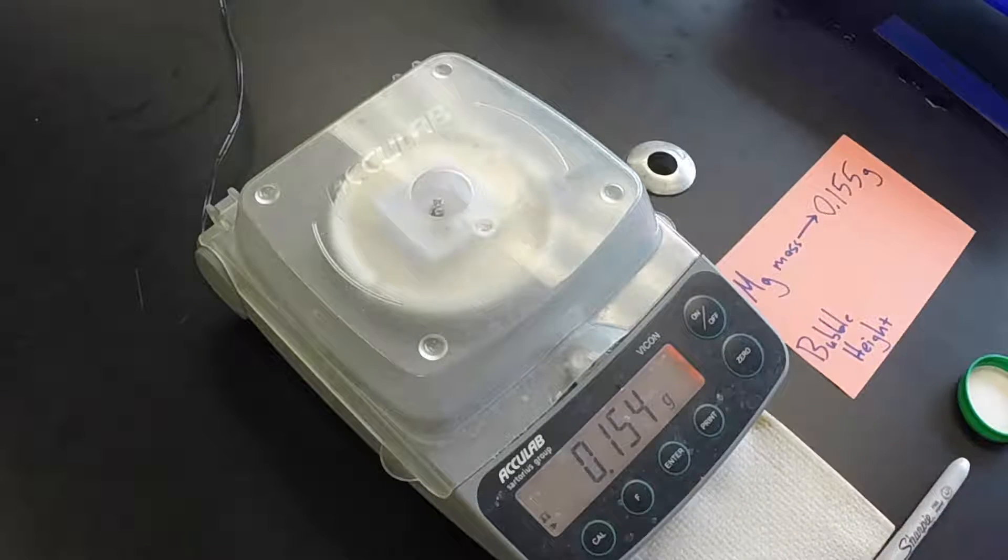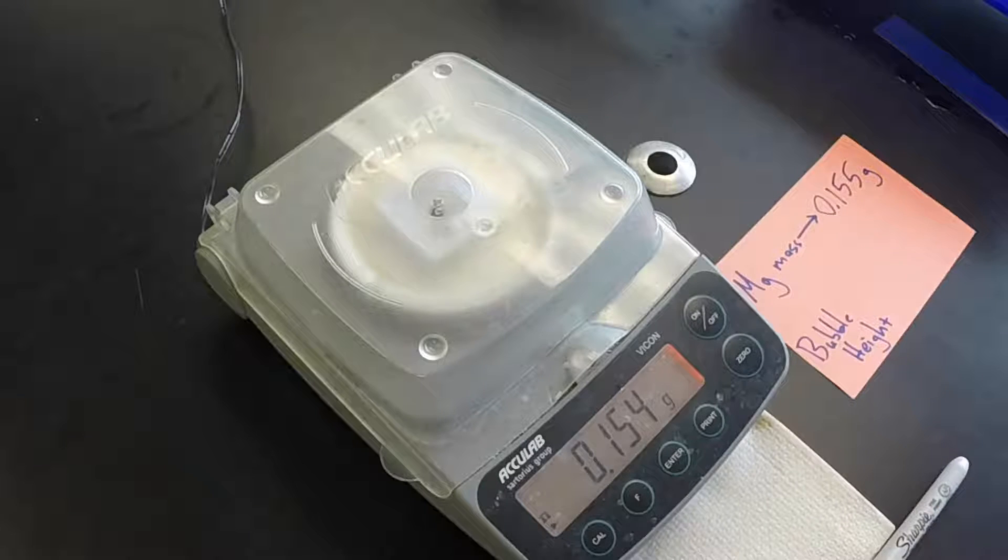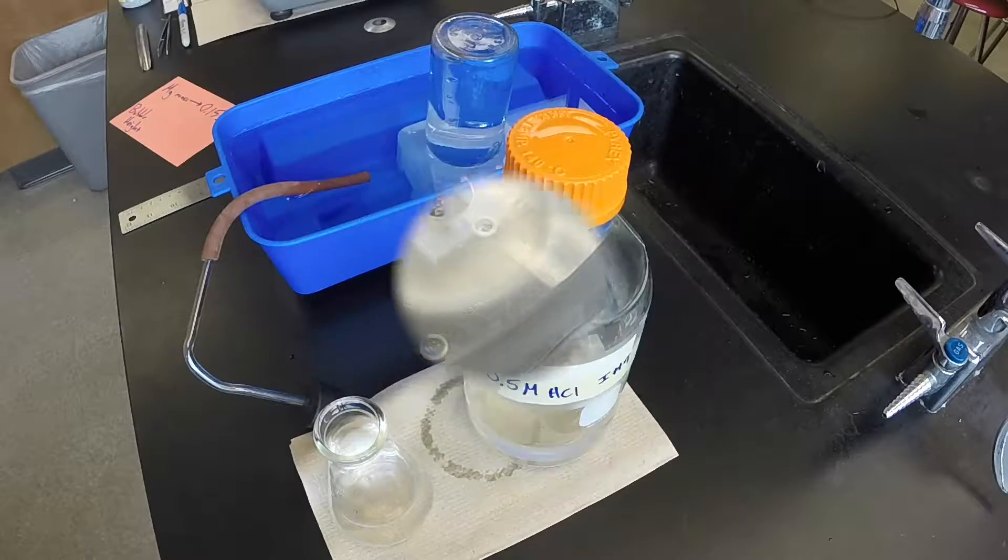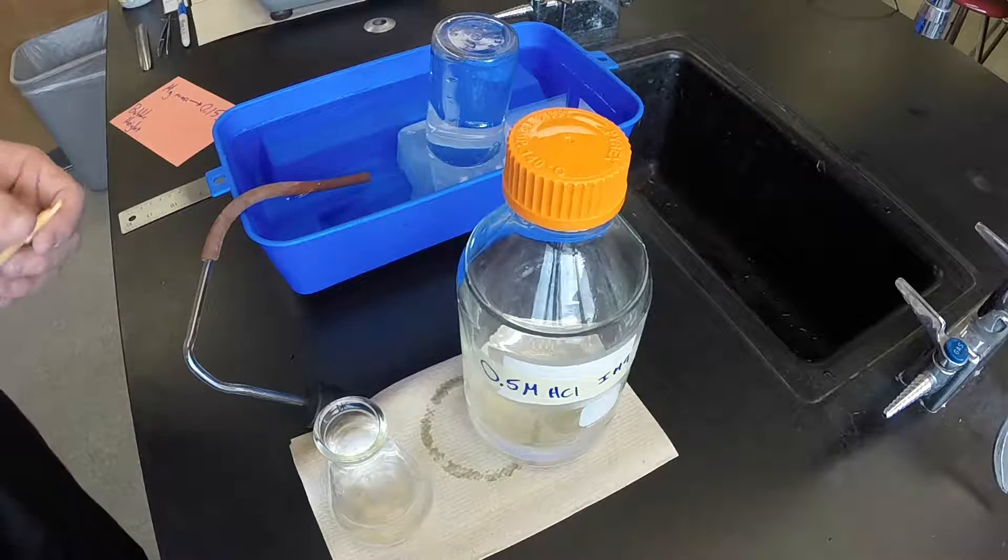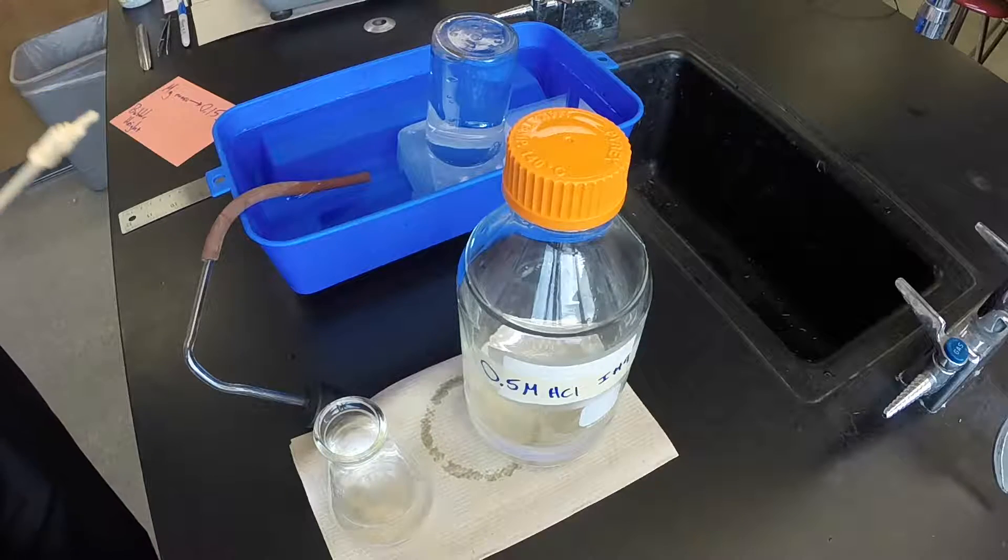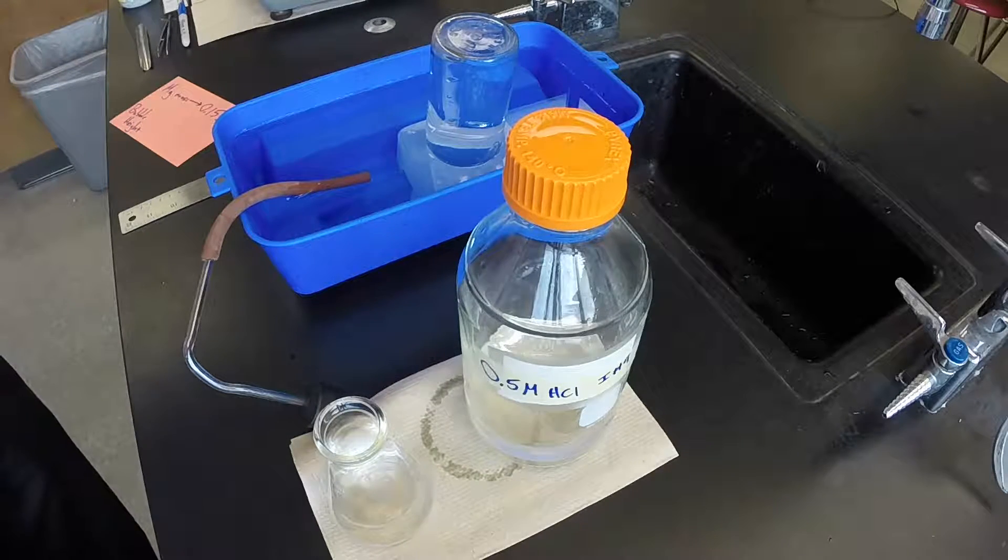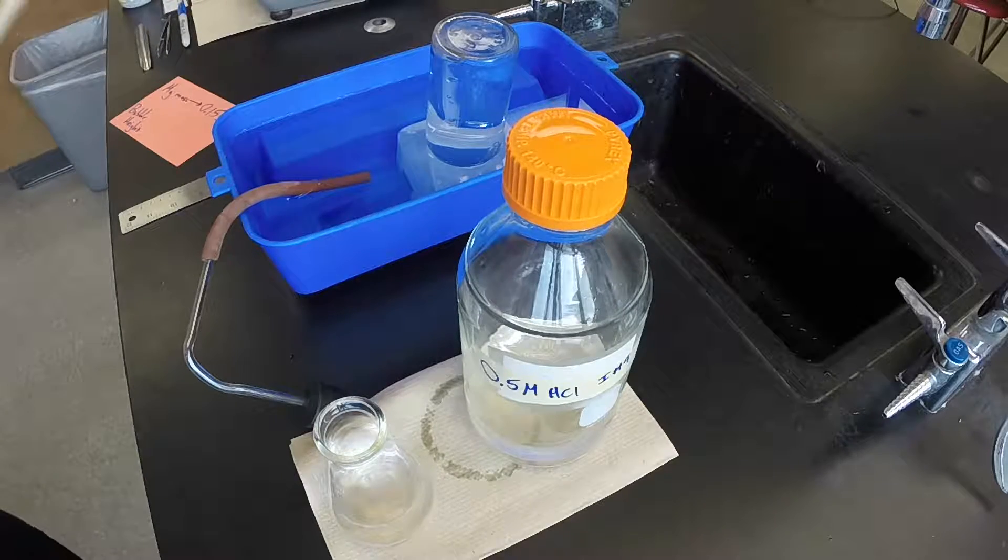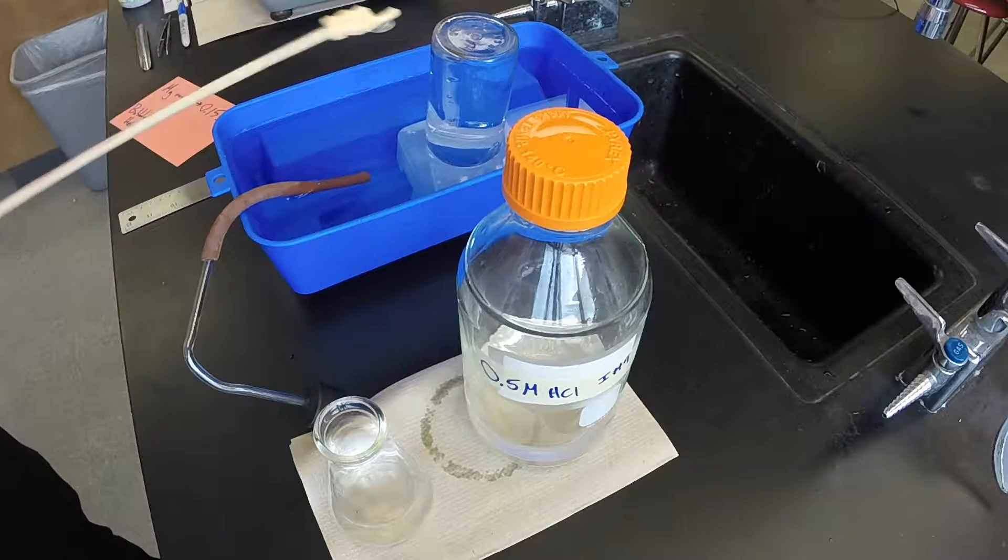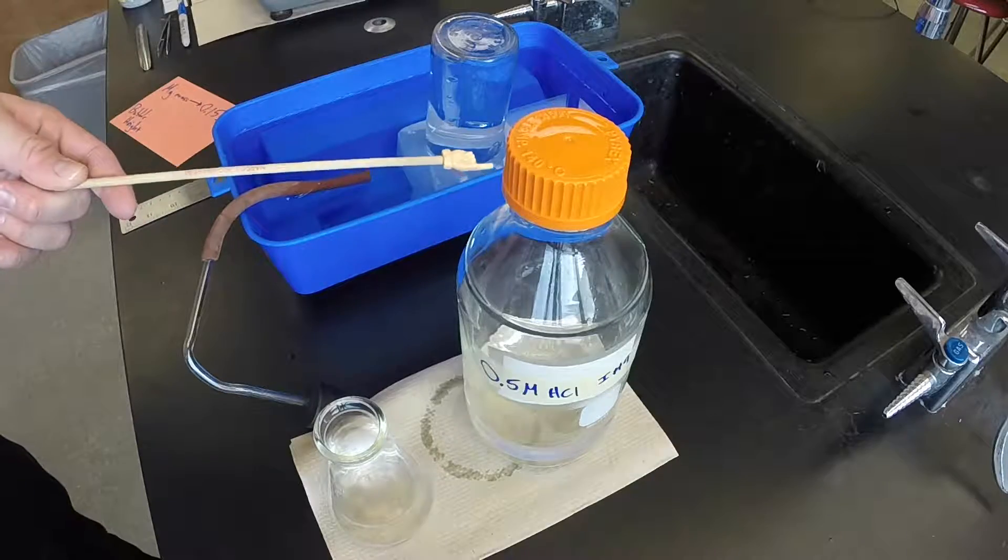Now what we're going to do then is we're going to take that magnesium metal and we're going to react it with hydrochloric acid. So what I have set up here is a way of collecting gas as a product of a chemical reaction. Many chemical reactions produce various gases, and this is a setup for collecting the gas.